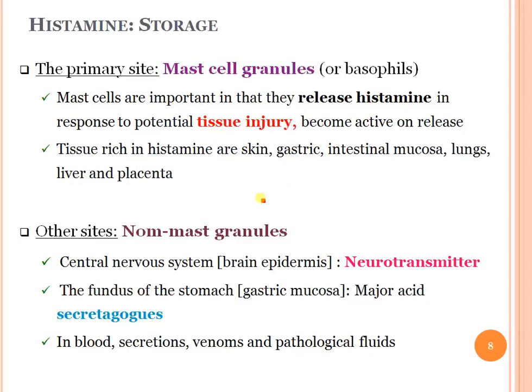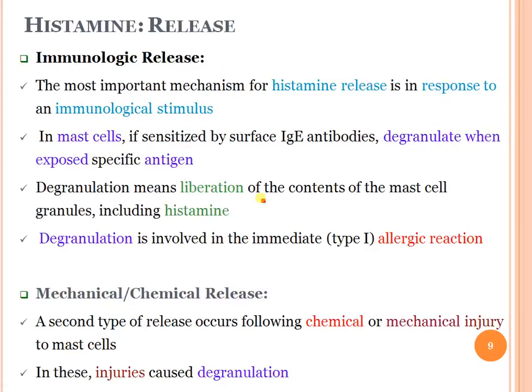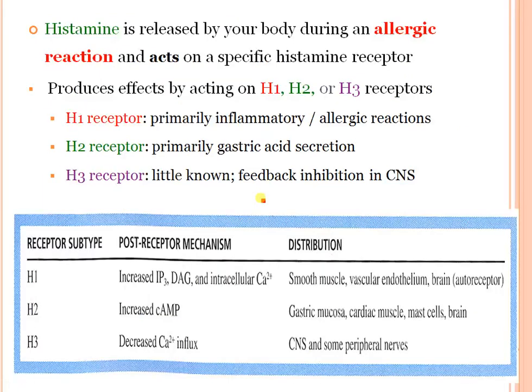The primary storage site for histamine is mast cell granules, with secondary non-mast cell granules. There are two release mechanisms: immunological release — the most important mechanism, occurring in response to an immunological stimulus — and a second type occurring following chemical or mechanical injury to mast cells, which causes degranulation.